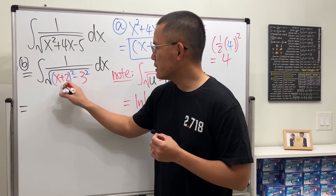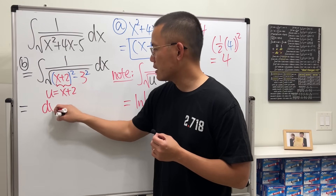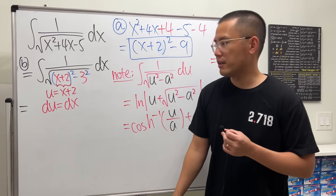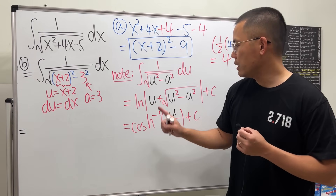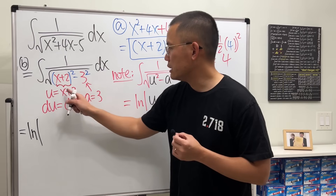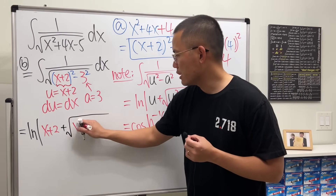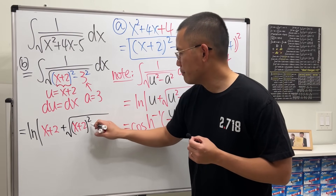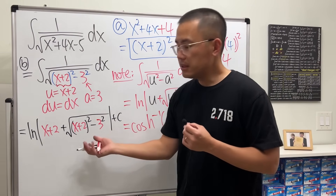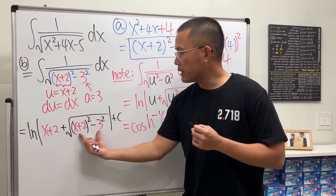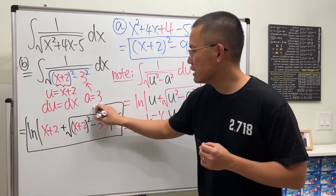Notice that here our u is (x + 2), and if you differentiate that, du is the same as dx, so we don't have to multiply or divide anything. The 3 here is our a. So this right here is just going to be ln|x + 2 + √((x + 2)² − 3²)|, and then close that and put a plus C.